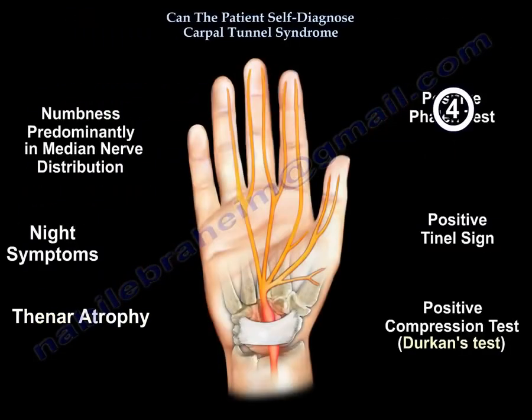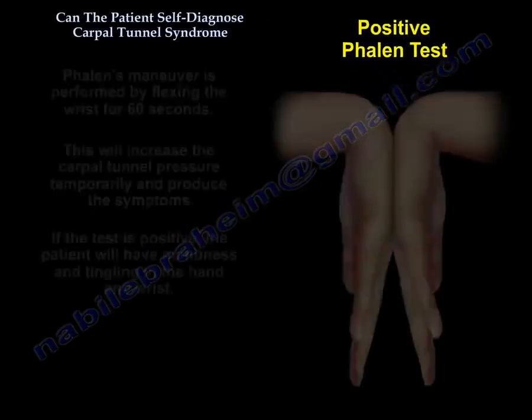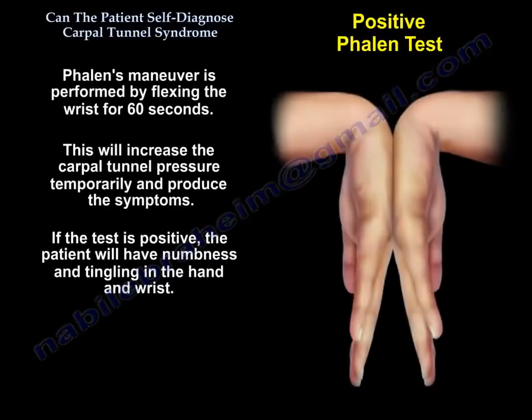The Phalen's Test is performed by flexing the wrist for 60 seconds. This will increase the carpal tunnel pressure temporarily and will reproduce the symptoms. If the test is positive, the patient will have numbness and tingling in the hand and wrist.